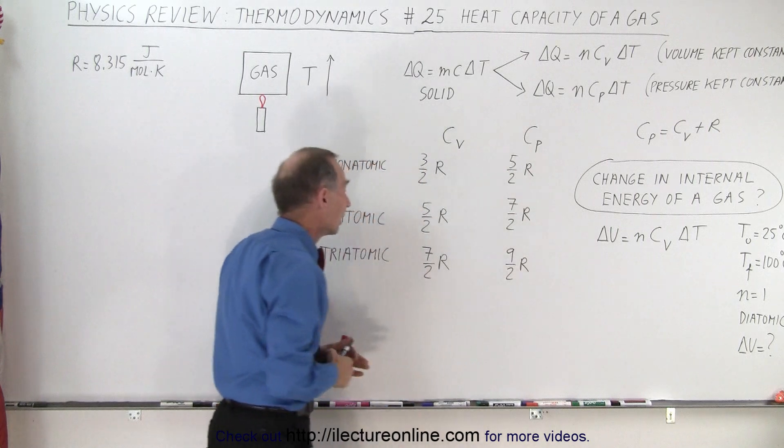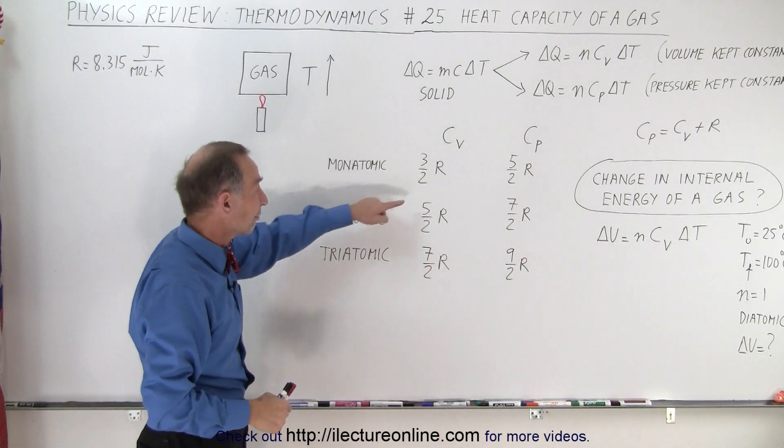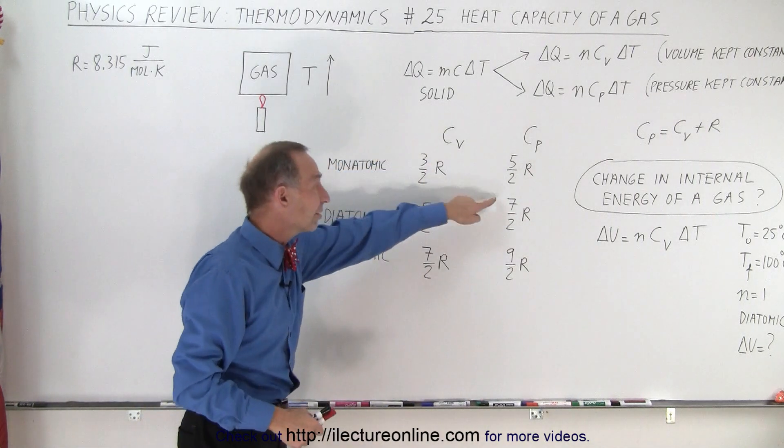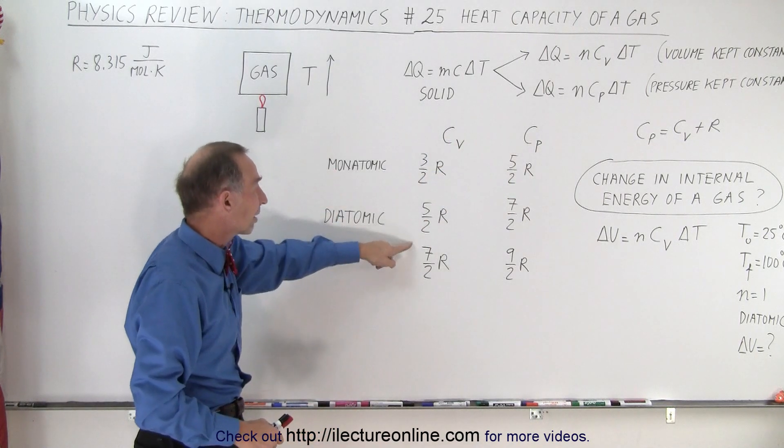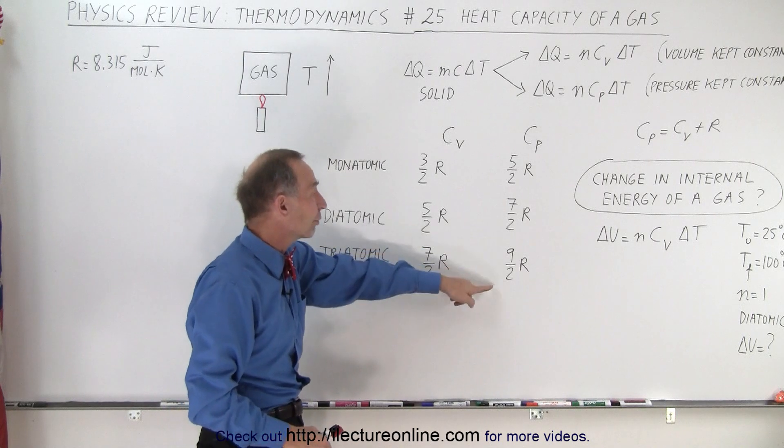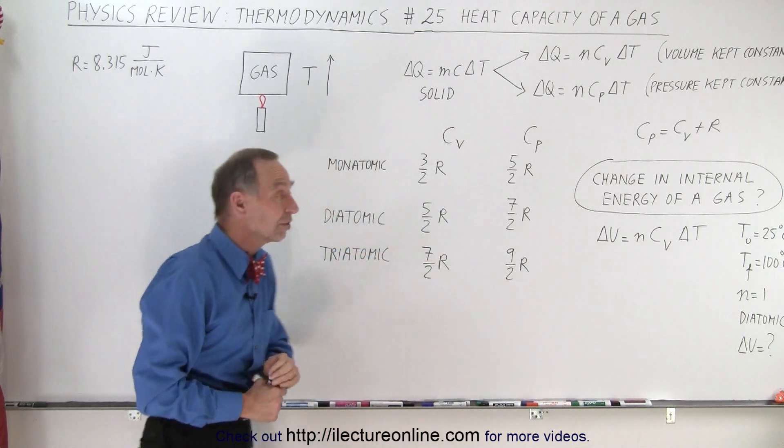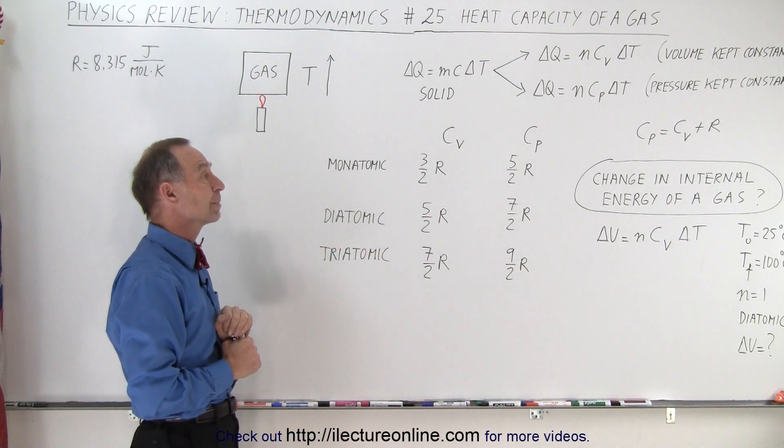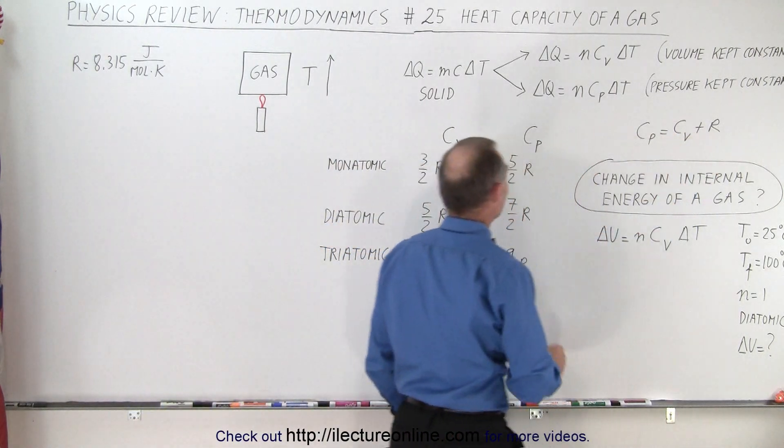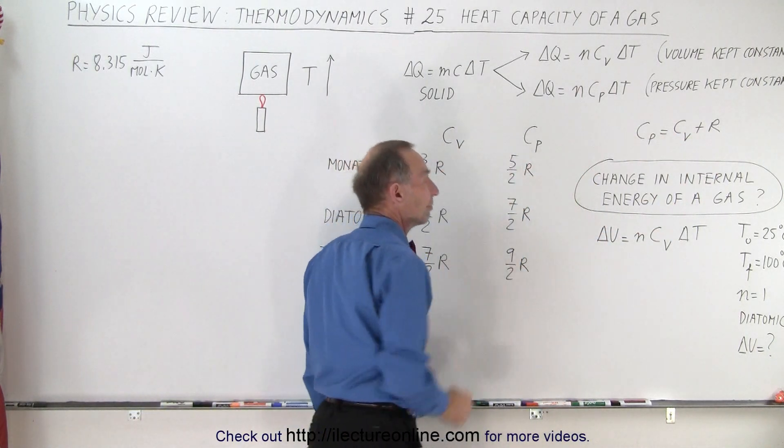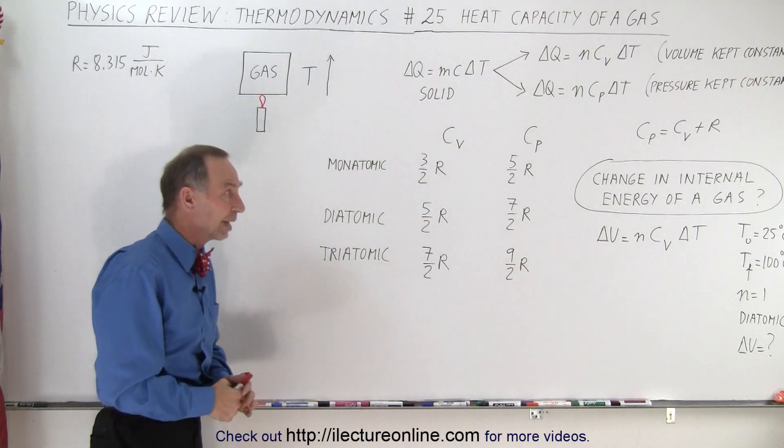If it's a diatomic molecule, it's 5/2R for C sub V and 7/2R for C sub P. And if it's a triatomic molecule, it's 7/2R times R, or 9/2R, depending upon whether you're dealing with C sub V or C sub P. So in general, C sub P is always 1R bigger than C sub V. So simply add 1R to get the value of C sub P for each of the types of molecules.